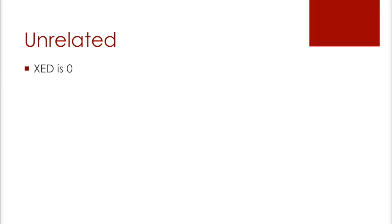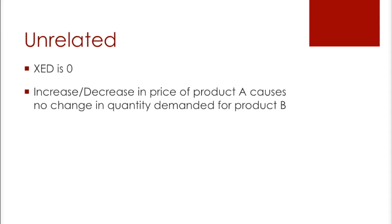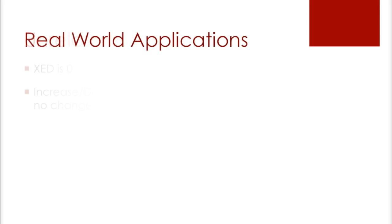Next we have unrelated goods, and this is shown when XED is equal to 0. This means that an increase or a decrease in the price of one product causes no change in the quantity demanded for another product. For example, if the price of Coke increases, the quantity demanded of rubber duckies will not change.